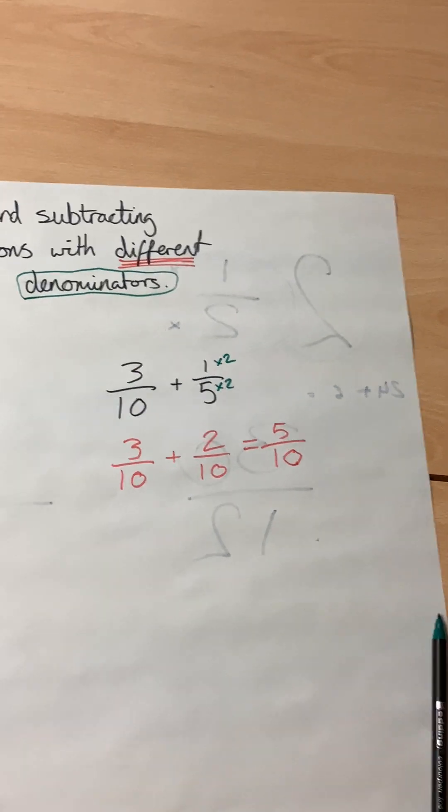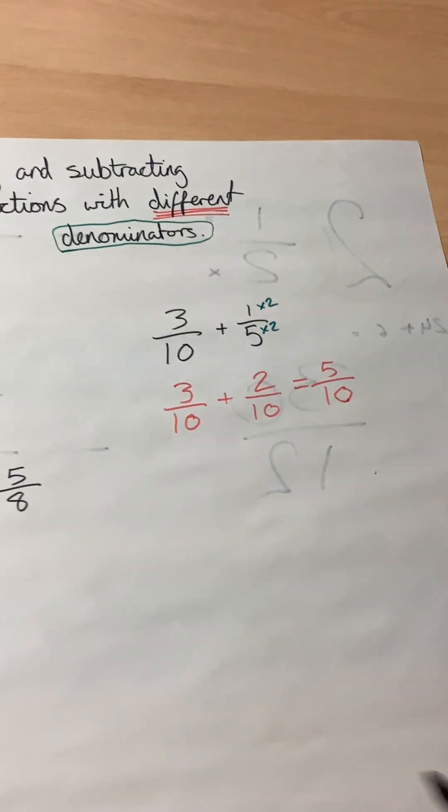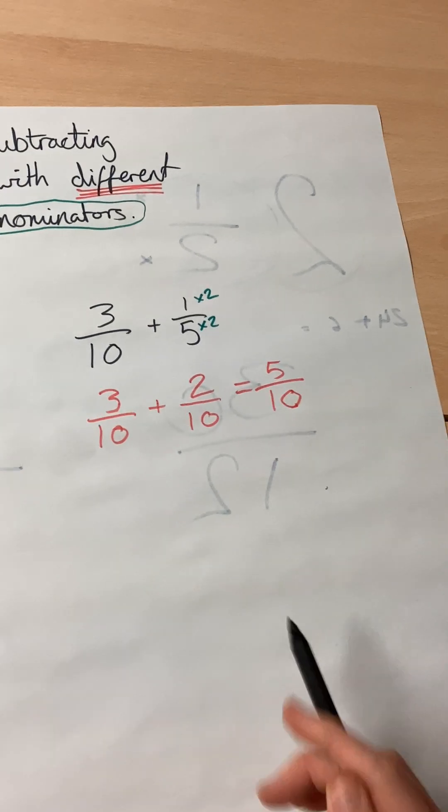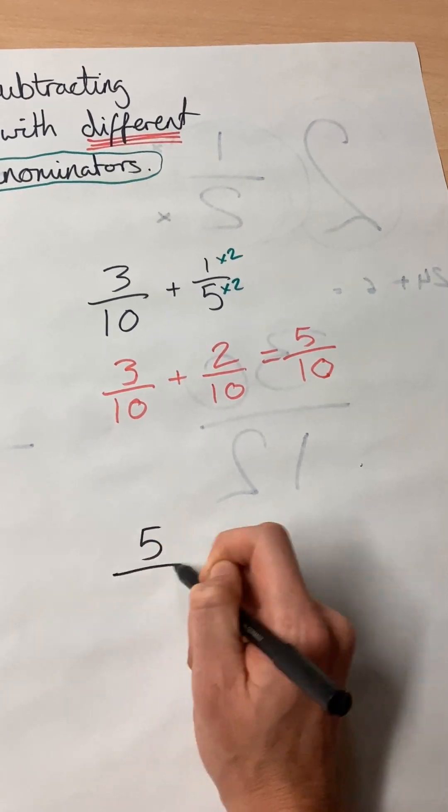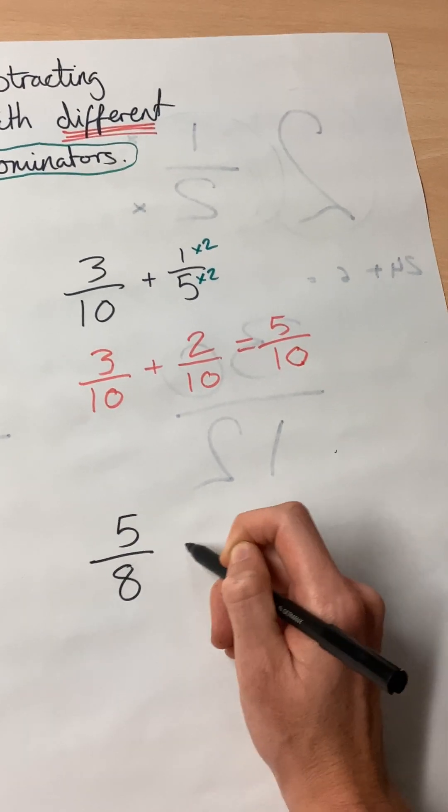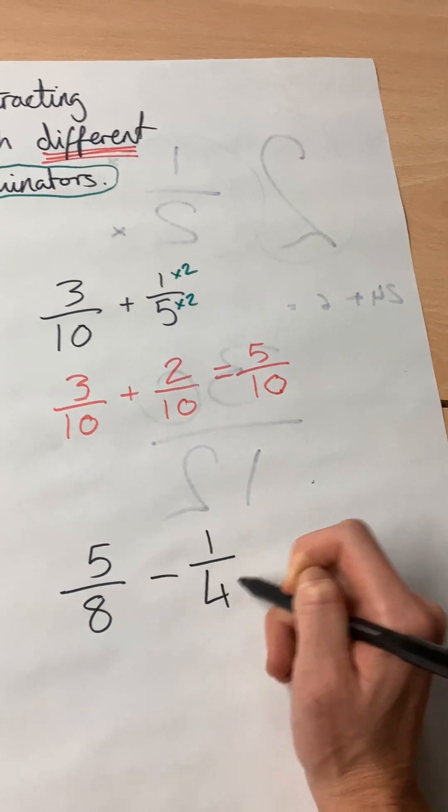So now I'll show you subtraction, but it works exactly the same. So if we had five-eighths minus one-quarter.